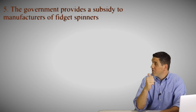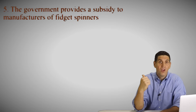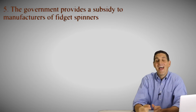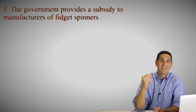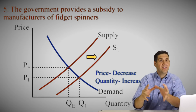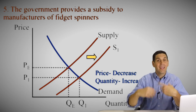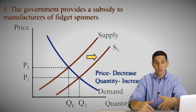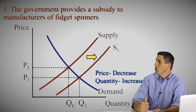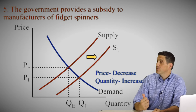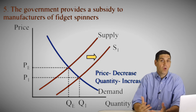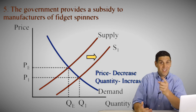Scenario five: the government provided a subsidy for fidget spinners. That means it's going to increase the supply. A subsidy is when the government gives money to producers to produce more stuff — it's the opposite of a tax. So the supply curve shifts to the right, price goes down, and the quantity goes up.